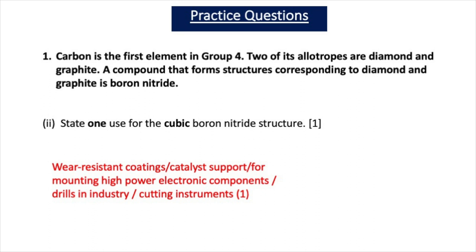The second part of question one says: state one use for the cubic boron nitride structure. This is a one mark question. You could say wear resistant coatings, you could say that it's a catalyst support, or it's used for mounting high power electronic components, or you could say it's used in drills in industry or cutting instruments. Any of those uses gets you one mark.